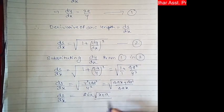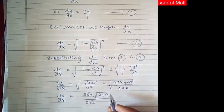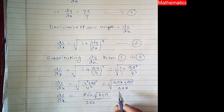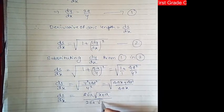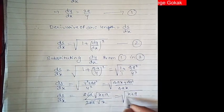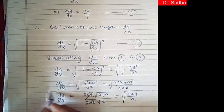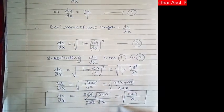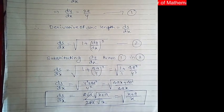Taking 4a common from the numerator, it gives 2√a · √(x + a). In the denominator also, taking 4ax = 4a · x under square root gives 2√a · √x. So the 2√a cancels, and ds/dx = √((x+a)/x).